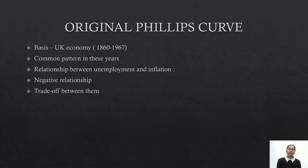If employment increases, workers have more bargaining power so they demand higher wages. Firms increase nominal wages but shift this burden by bringing changes in commodity prices — woh firms shift kar dengi to the consumers by increasing prices of commodities. So inflation wali situation arise ho jayegi. This gives us the relationship: unemployment is falling and inflation is rising.